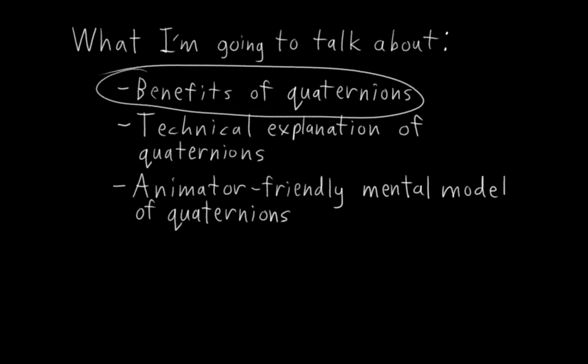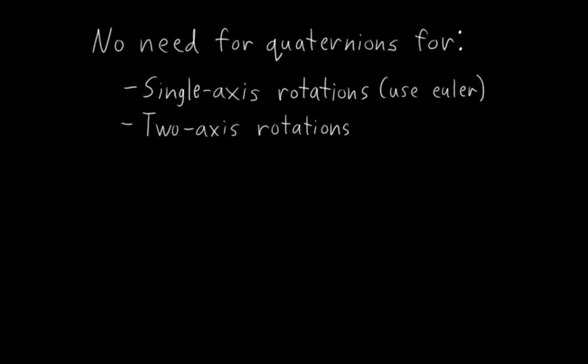So what's so good about quaternions? Well, first I'm going to tell you one circumstance where you never need to use quaternions: single-axis rotations. There's no reason to ever use quaternion rotations for controls that only ever rotate on one fixed axis. It's pointless. For those, use Euler rotations. And similarly, for two-axis rotations, Eulers are often a good choice as well.